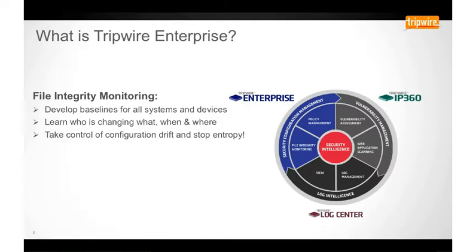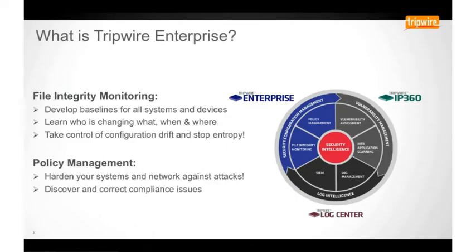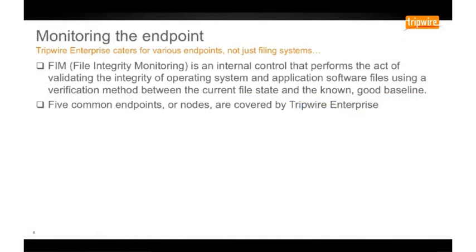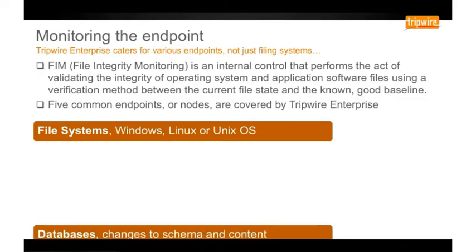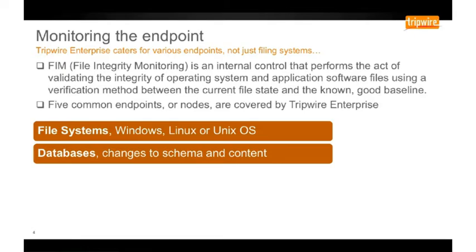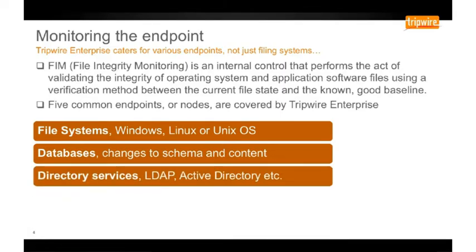It ensures integrity and maintains a known and trusted state for critical systems and the information they contain. Tripwire Enterprise's Policy Manager module helps customers meet the numerous security standards and regulations they face — from not only in-house security requirements, but also government regulations such as PCI, ISO, CIS, and many more. There are a number of different endpoints that Tripwire Enterprise can monitor. The most common is file systems — hence the term file integrity monitoring — monitoring in real-time files under Windows, Linux, and other operating systems. For databases, Tripwire Enterprise not only monitors changes within the database itself, but can monitor changes to the structure of the database, known as the database schema. Another common endpoint is changes to directory services, such as Active Directory — for example, identifying who added who to the administrators group and when.